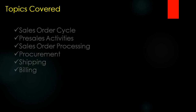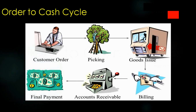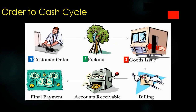In the order-to-cash cycle, first we receive the customer order and create the sales order in the SAP system. The second step is picking — the customer will pick up the goods, or we can send them via truck, train, courier, or whatever service. The customer can also manually pick up the goods.